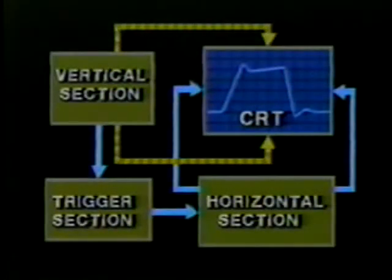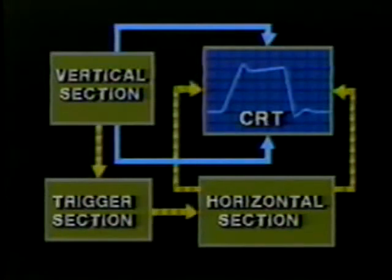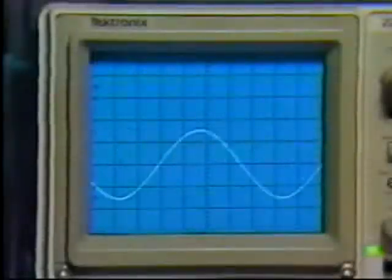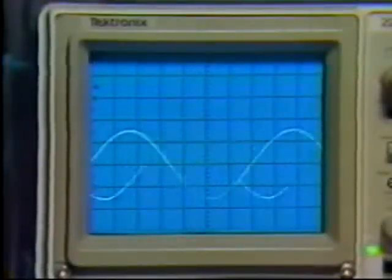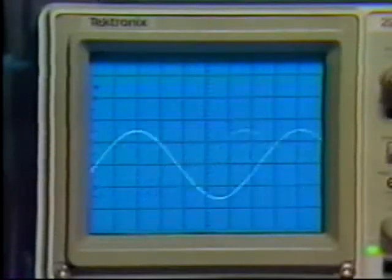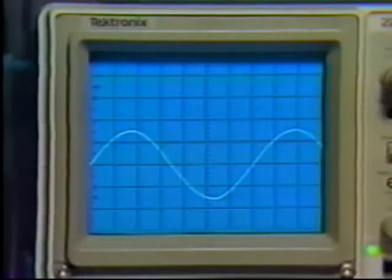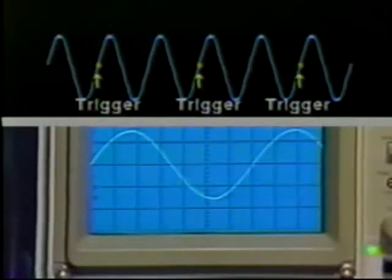We've examined the signal path through the vertical section; now let's follow the signal path through the horizontal section. The input signal is coupled from the vertical input BNC to the trigger circuit. The trigger circuit takes a sample of the incoming signal and shapes it. This shaped trigger signal starts the sweep, ensuring horizontal stability of the trace by beginning each sweep at the same point in relationship to the incoming signal. Without triggering, the trace would free run — each sweep would start at a different time, resulting in a confused collection of unmeasurable traces.